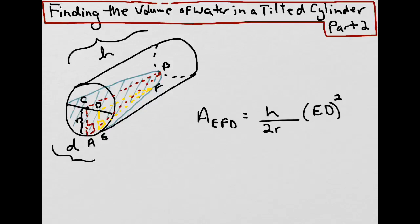The first step was to determine the area function for a triangular slice. We created triangle EFD here in terms of the height and the radius of the cylinder and the variable DE. What we came up with was this equation right here: the area of EFD equals the height divided by twice the radius times ED squared.